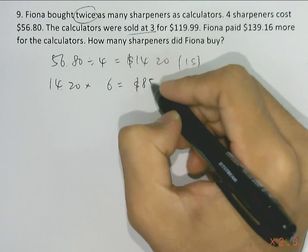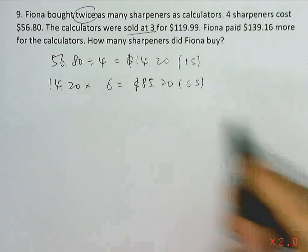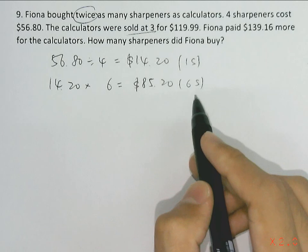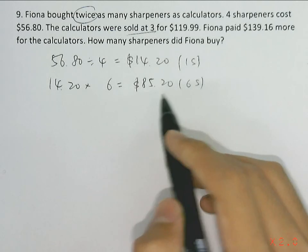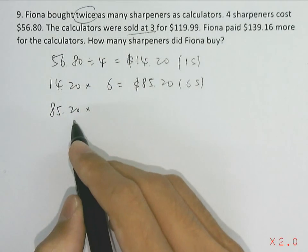$85.20, which is six sharpeners. So if you group six sharpeners and three calculators together, within a group the difference of the price between sharpeners and calculators will be taking $85.20, which is the price of the six sharpeners.